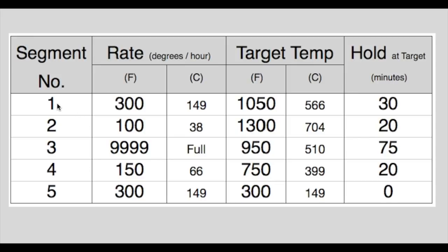In this first segment we're instructing the kiln to ramp or change temperature at a rate of 300 degrees per hour until it reaches 1050 degrees and then hold there for 30 minutes before moving on to segment 2.